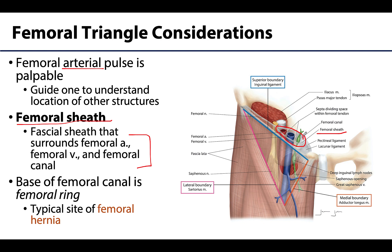At the base of the femoral canal is a structure called the femoral ring — an oval, ring-like shape that represents a relatively weak area associated with the femoral triangle region. It is most typically the originating site of a femoral hernia, which is a herniation or protrusion of abdominal viscera through the femoral ring and into the femoral canal. If observable, it presents as a small bulge in the medial femoral triangle region.